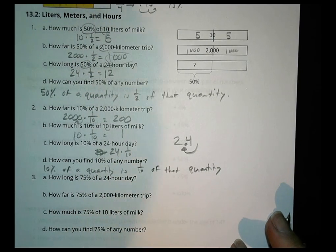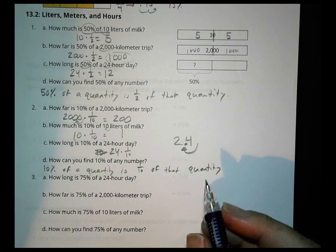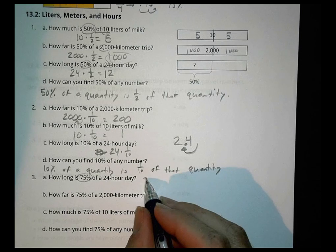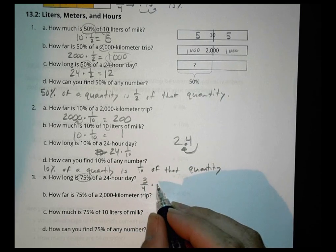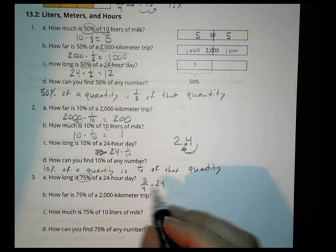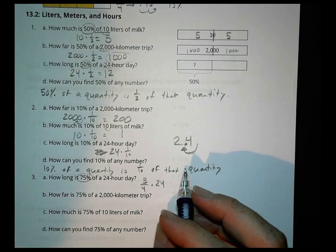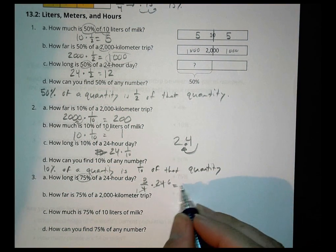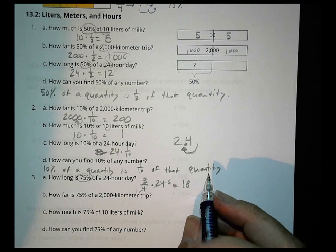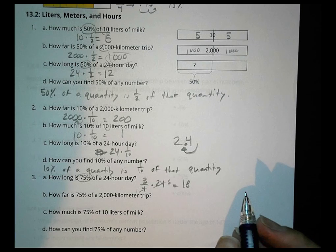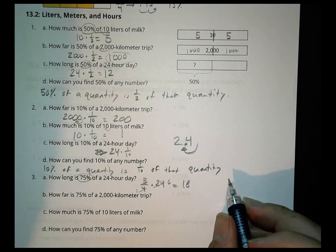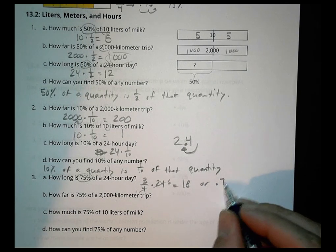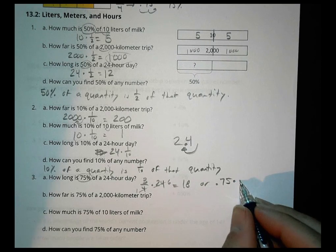How can you find 10% of any number? 10% of a quantity is 1 tenth of that quantity. And we like doing the 1 tenth because it allows you just to move the decimal over one place value. And the last one here, how long is 75% of a 24-hour day? 75% we already established was 3 fourths. So we're doing 3 fourths of a 24-hour day.